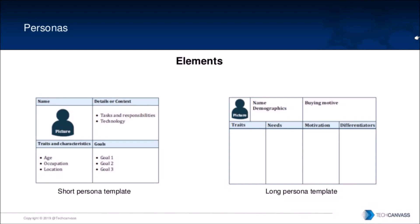The longer persona template includes the name, other demographics of that person, then the buying motive — which is basically the goal. You can summarize that, along with the traits of that person, the needs, motivation, and differentiator. The differentiator describes how this persona is different from the others. For example, if you have two personas — one of a student and one of an admin — the differentiator simply defines that this person is a student whereas the other is an admin, basically defining the particular role of that person.